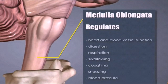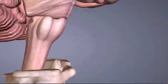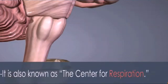Medulla oblongata regulates heartbeat, breathing, and other involuntary movements like swallowing, blood pressure, coughing, and sneezing. Medulla oblongata is also known as the center of respiration.